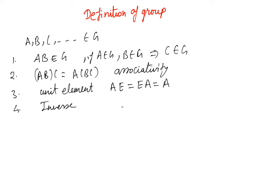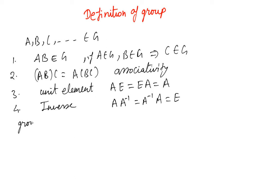The fourth condition is the existence of an inverse: if there is an element a, there should also be an inverse a⁻¹ such that a·a⁻¹ equals a⁻¹·a equals e. These are the four conditions required for a group.